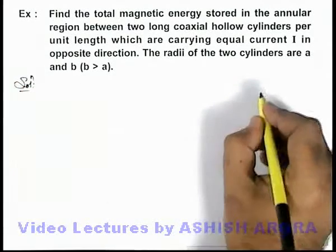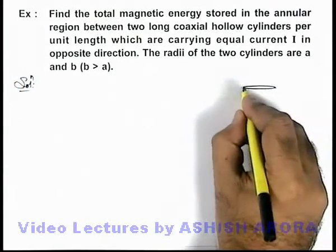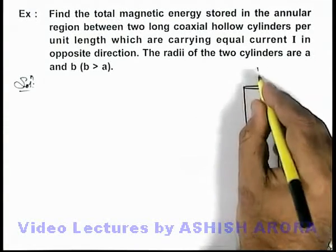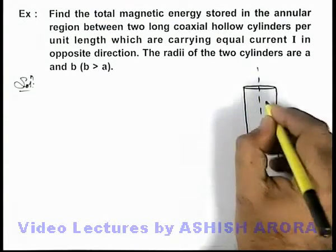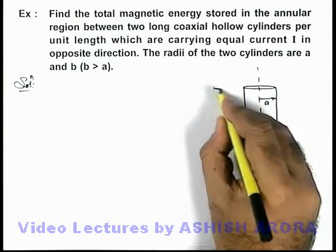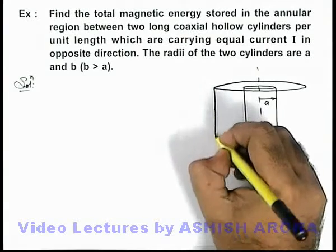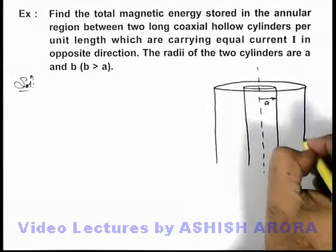Now in this situation, if we draw the physical situation, we can see this is a hollow cylinder which is having its radius a, and there is another outer hollow cylinder which is having its radius b, and the two are coaxial.